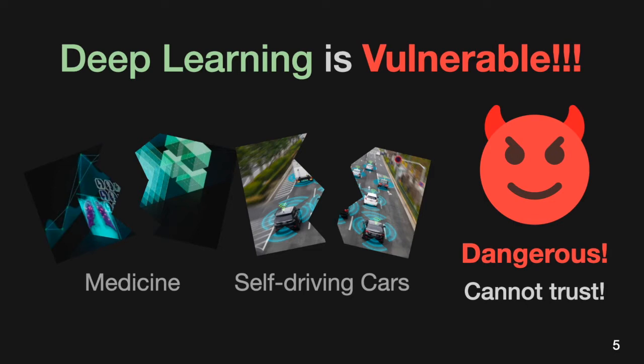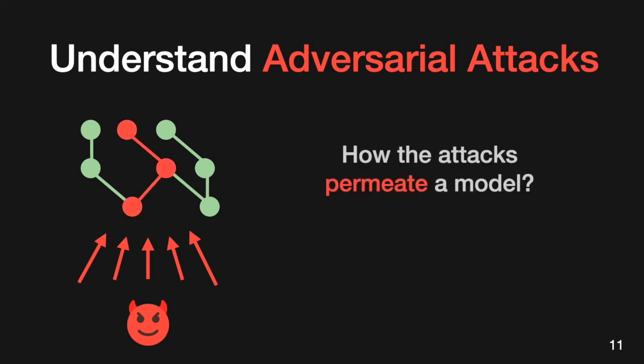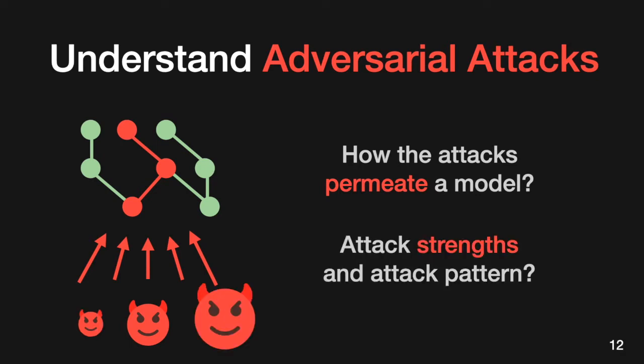An adversarial attack applies carefully crafted perturbations on data inputs and fools a model into making incorrect predictions. Due to the threats of adversarial attacks, people cannot confidently use deep learning models. To overcome this vulnerability, we need to understand how adversarial attacks permeate the model's internals. For a better understanding, it would be worthwhile to examine if and how an attack's strength changes how the model produces incorrect predictions — for example, whether a stronger attack exploits the same neurons as a weaker attack, or if those sets are completely different.